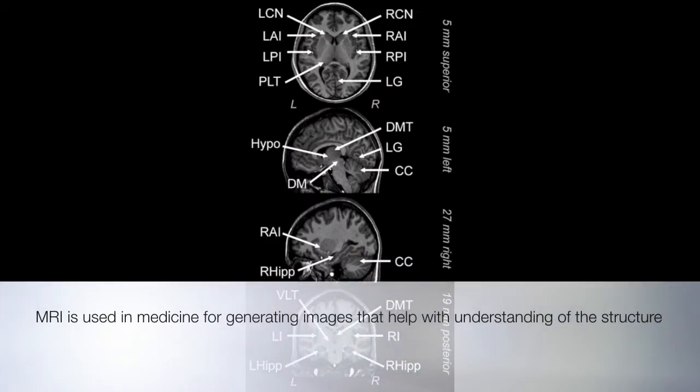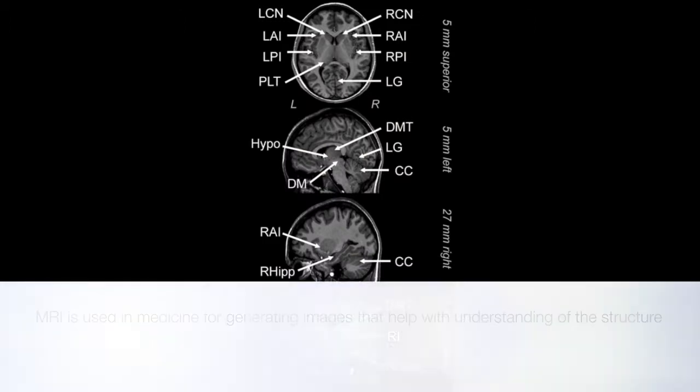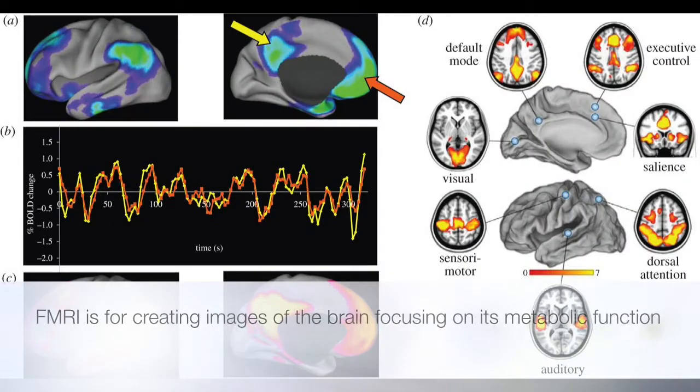MRI is used for obtaining images and helping visualize the inside structure of the body. fMRI is for getting images of the brain focusing on its metabolic function.